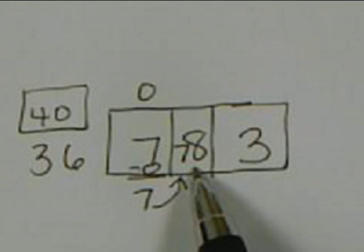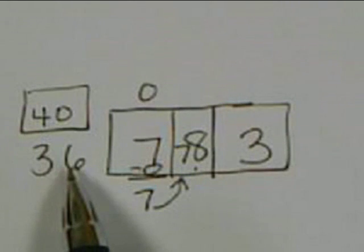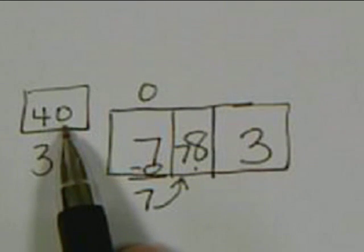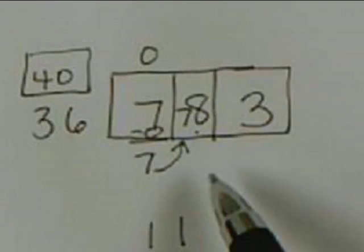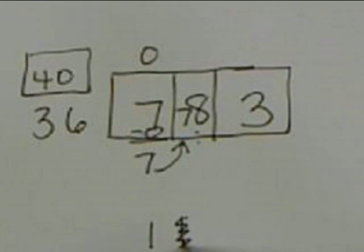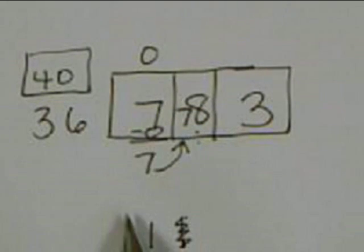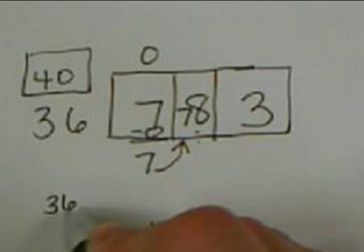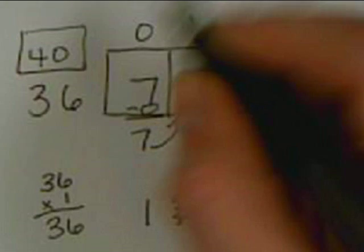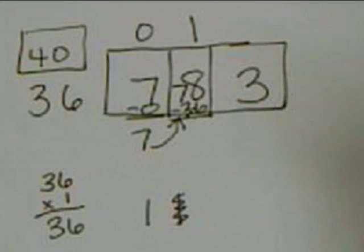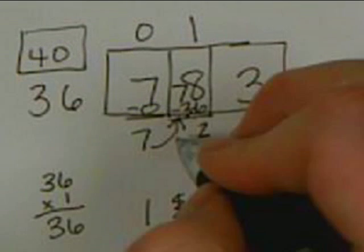Now we have 78 in this box. It's easier for students to count by 40s than by 36, so I want them to use 40 as their estimate. They count by 40: 40, 80 — and they know 80 is bigger than 78, so that won't work. So 36 will only go into 78 one time. They check it: 36 times 1 is 36, so at the top of the box they put a 1.